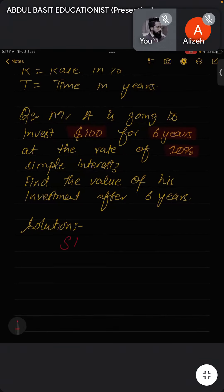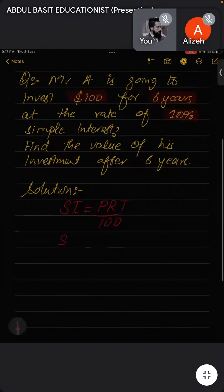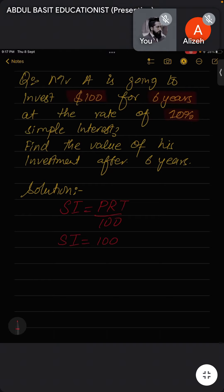SI equals principal is 100, R is the rate which is 10%, and T is the time which is 6 years. So 100 × 10 × 6 ÷ 100. We can cancel out these two zeros, so 1 × 10 × 6 equals $60. It means that in six years he'll get $60.